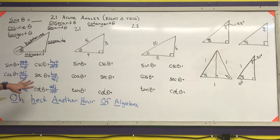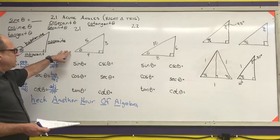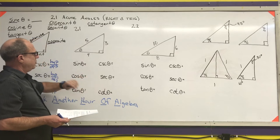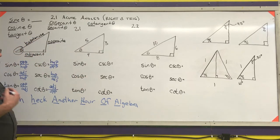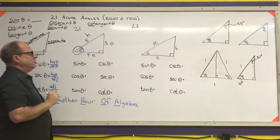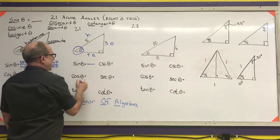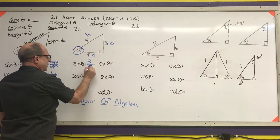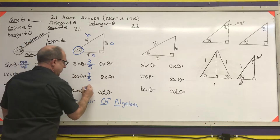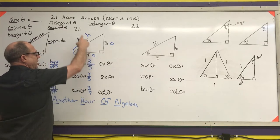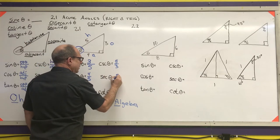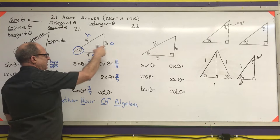All of that is already written in your notes. So I'm going to do example 2.1, which gives us a triangle with side lengths 3, 4, and 5, and asks us to find sine, cosine, tangent, cosecant, secant, and cotangent of angle theta. The way I always do these: circle the angle, label my sides, and then use my ratios. Sine is opposite over hypotenuse, cosine is adjacent over hypotenuse, tangent is opposite over adjacent, cosecant is hypotenuse over opposite, secant is hypotenuse over adjacent, and cotangent is adjacent over opposite.